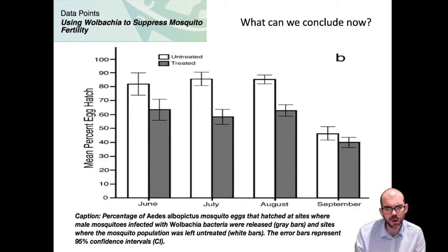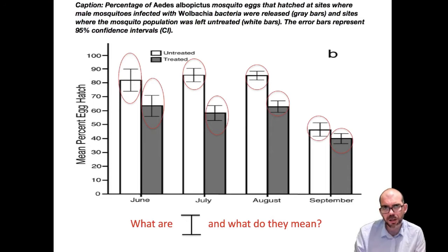So here's the caption associated with this data set. Percentage of mosquito eggs that hatched at sites where male mosquitoes were infected with bacteria and released are a treated group. And sites where mosquito populations were left untreated, the white bars, didn't get any exposure to that bacteria. And then it says the error bars represent confidence intervals. Interesting. That gives me some insight into the untreated mosquitoes, no bacteria, treated had bacteria. Seems like the bacteria is having some kind of an effect. But I want to know what these error bars are and what they mean by a 95% confidence interval. You can see at each of these bars, there's a bracket going above and below the average egg hatch.